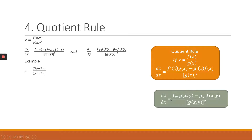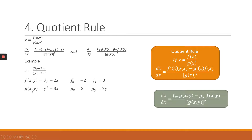We are going to calculate the partial derivative of z with respect to x. Our f(x,y) is 3y minus 2x. When differentiating with respect to x, the first element 3y has no x so it behaves like a constant — its derivative is 0. The second element, minus 2x, differentiates to minus 2. The partial derivative of f with respect to y is 3. For our g function, y squared plus 3x: differentiating with respect to x gives 3, since y squared behaves like a constant. Differentiating g with respect to y gives 2y, using the power rule, since 3x behaves like a constant.